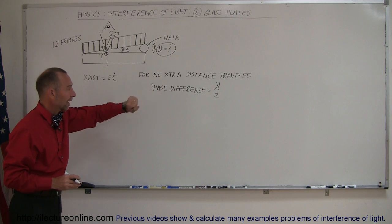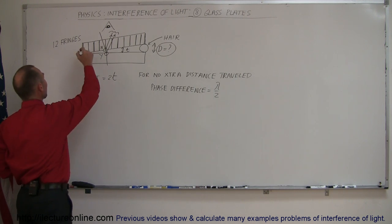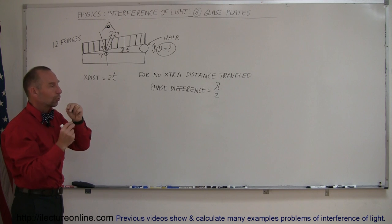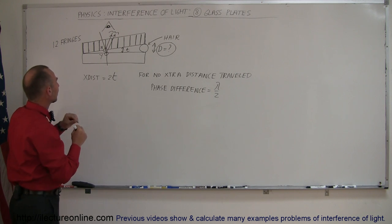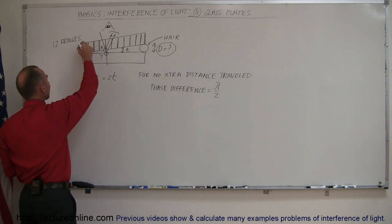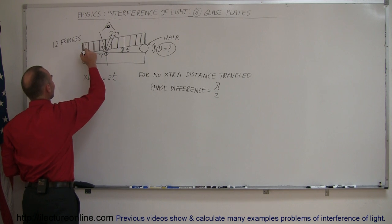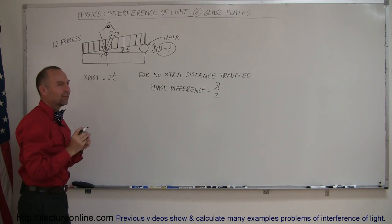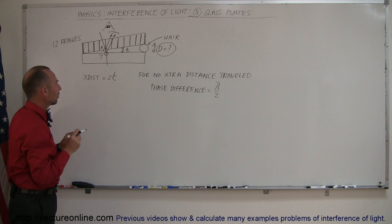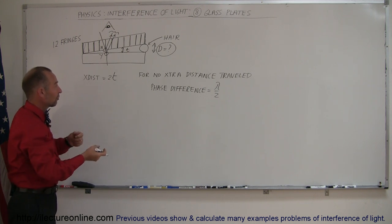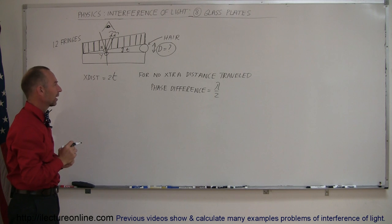So there's a phase difference of half a wavelength, which means at the very beginning — when the gap is just barely greater than zero — there will be destructive interference. Any light reflected off the top surface and the bottom surface, since there's really no extra distance traveled by the second ray, but the second ray does experience a phase shift where the first one doesn't, they will already differ by half a wavelength.